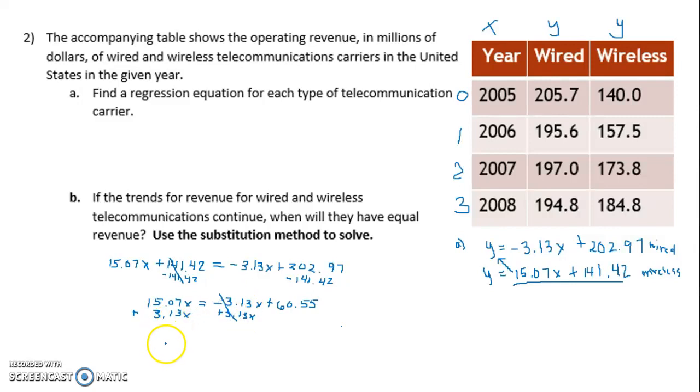And so I had 18.2x equal to 60.55. And final step of solving was to divide by 18.2. These cancel on this side. I'm left with X equal to 3.327.